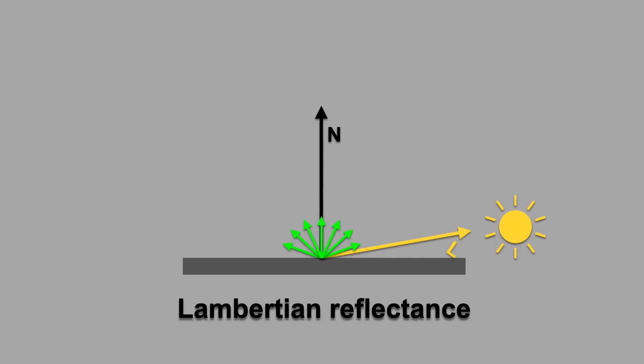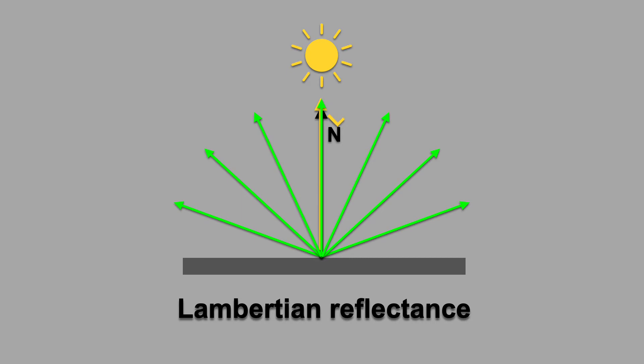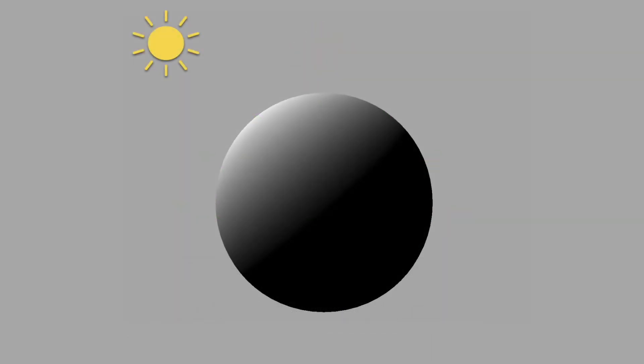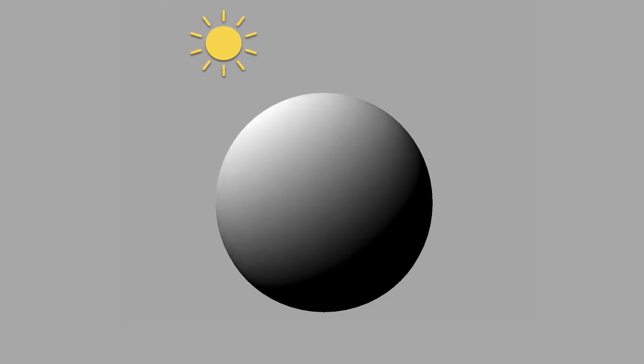It predicts how bright a diffuse object is lit from different directions. Here's a diffuse sphere rendered with this formula. We can simulate what happens when we move the light source.